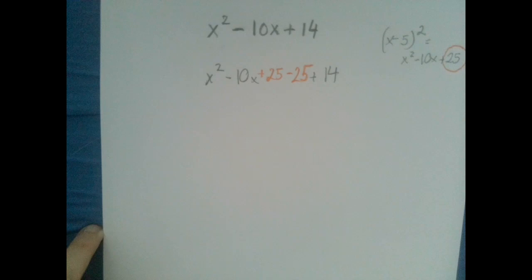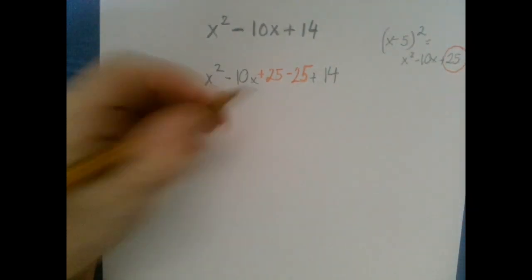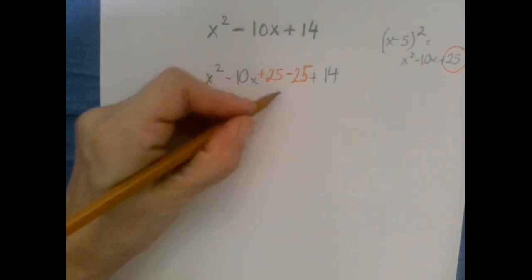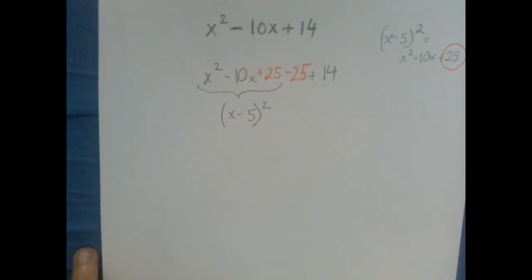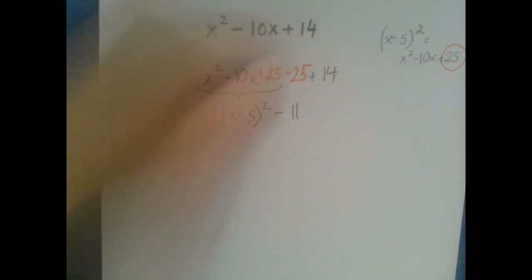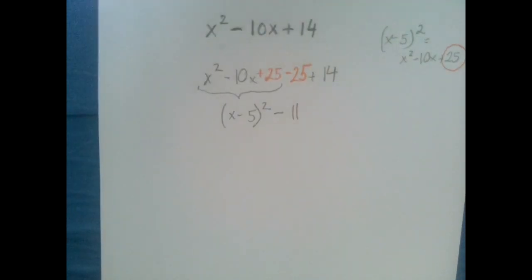That way, we just added 0 to this expression, so we didn't change its value. The first three terms get absorbed into the complete square, and the last two terms are just combined. Negative 25 and plus 14 are combined to get negative 11. So now we have x minus 5 squared minus 11.